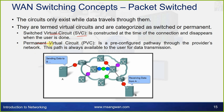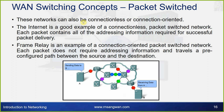A switched virtual circuit (SVC) is constructed at the time of connection and disappears when the user is done. A permanent virtual circuit (PVC) is a pre-configured pathway through the provider's network, always available for data transmission. These networks can also be connectionless or connection-oriented. The internet is a good example of a connectionless packet switched network, where each packet contains all addressing information required for delivery. Frame Relay is an example of a connection-oriented packet switched network, where packets travel a pre-configured path between source and destination.